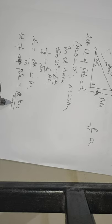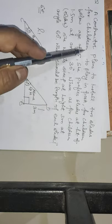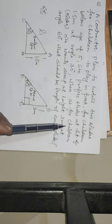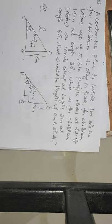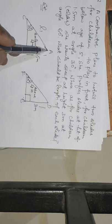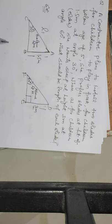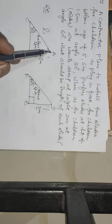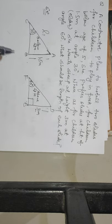Question 5: A contractor plans to install two slides for children to play in a park. For children below the age of 5, he prefers a slide at the height of 1.5 meters at angle 30 degrees, whereas for elder children, he wants it at the height of 3 meters at angle 60 degrees. What should be the length of each slide?